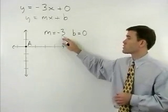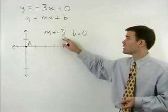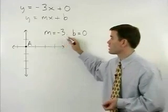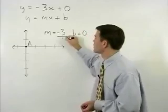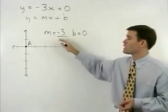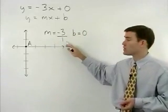Remember that when your slope is an integer, you can change it to a fraction by putting it over 1. So our slope of negative 3 can be thought of as negative 3 over 1.